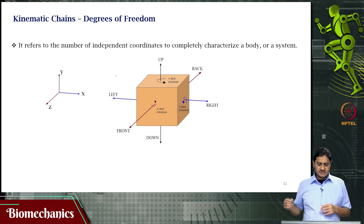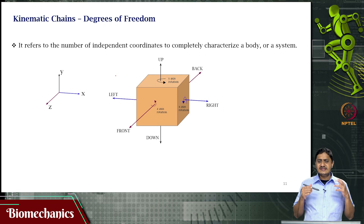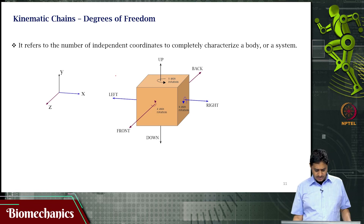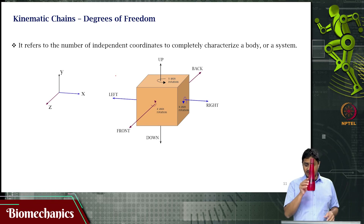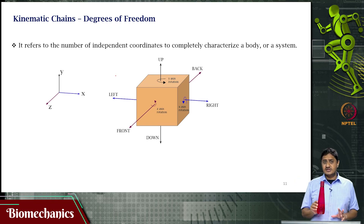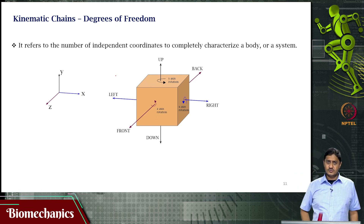What is degrees of freedom? It is the number of independent coordinates that are required to completely describe a given body. Consider this object: it can translate upward or downward — that is one degree of freedom. It can translate to the left or the right, and it can also translate towards you or towards me.